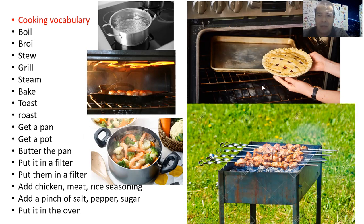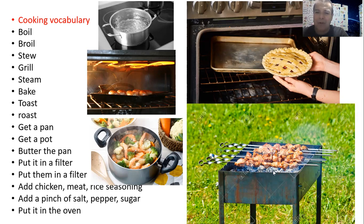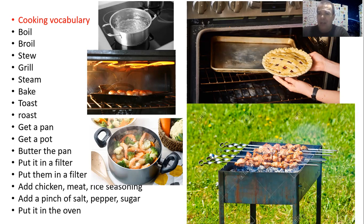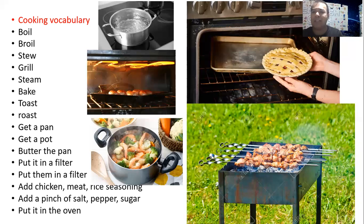Then grill — grill is basically when you have a griller and you are grilling something, similar to this picture right here. At the same time, if you're using some coal, which is material that you ignite with fire and it gets hotter and hotter — that's basically like roast or roasting something. In this case, you can see the different skewers. Skewers are this metal object, like a pick, where you can put meat or vegetables, or a combination of both.